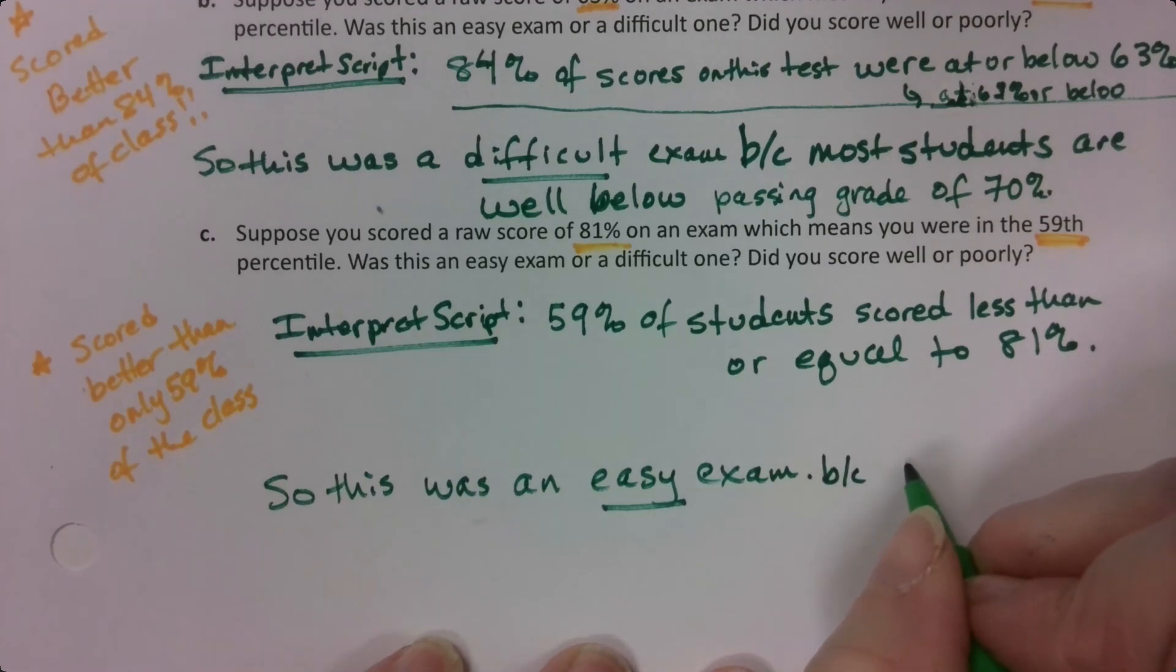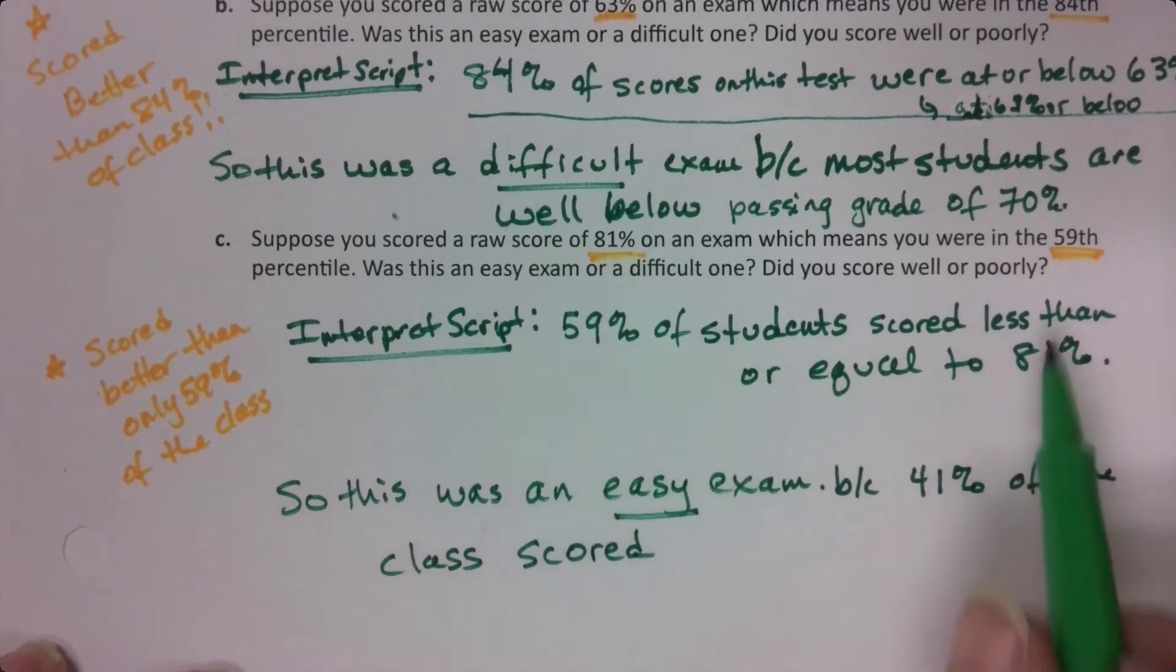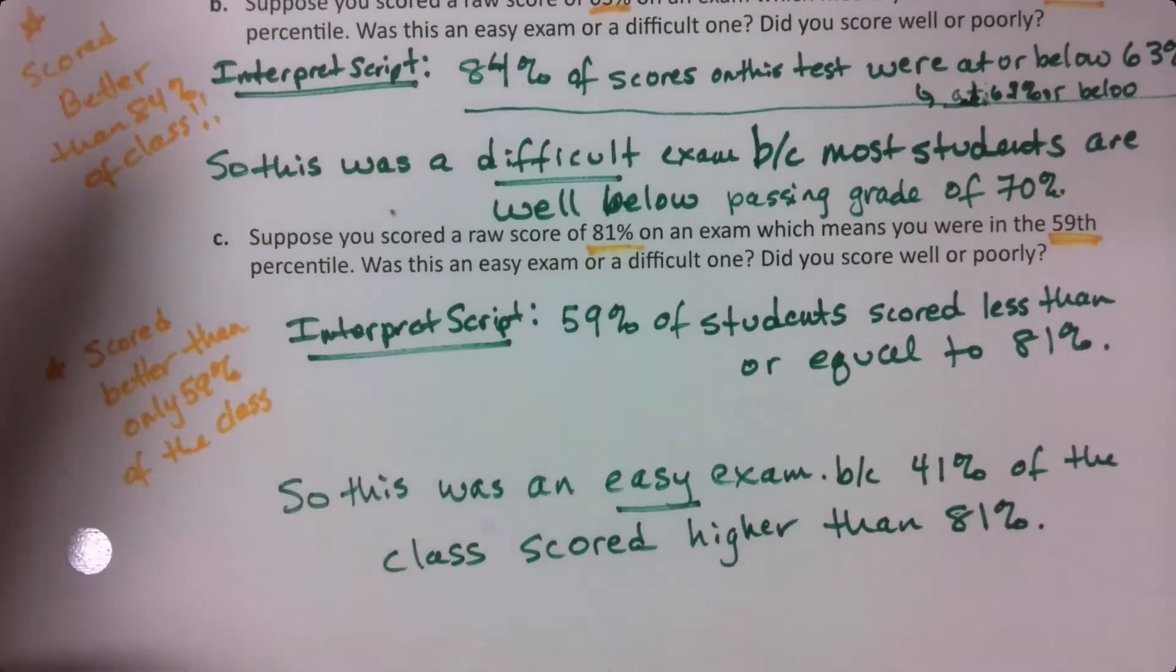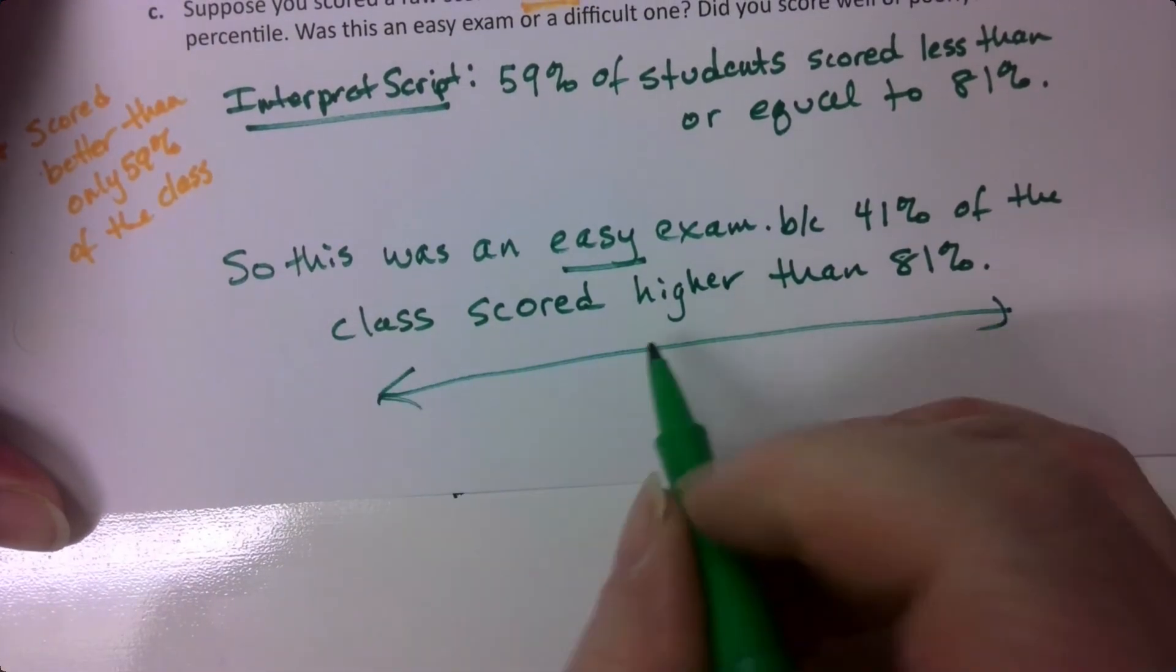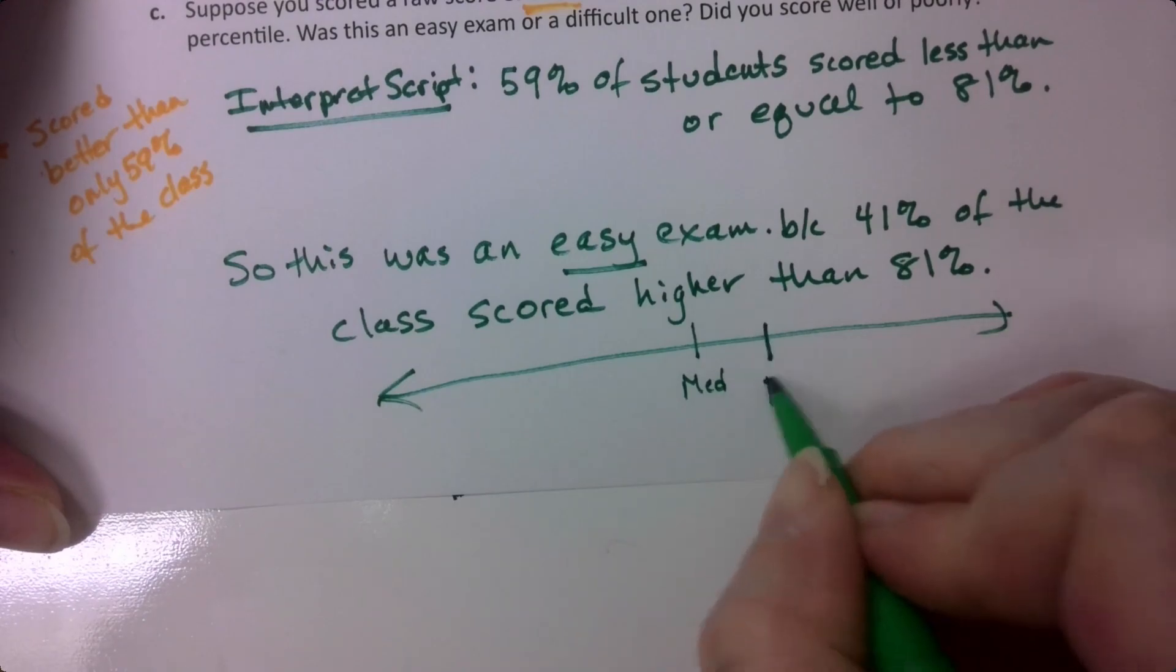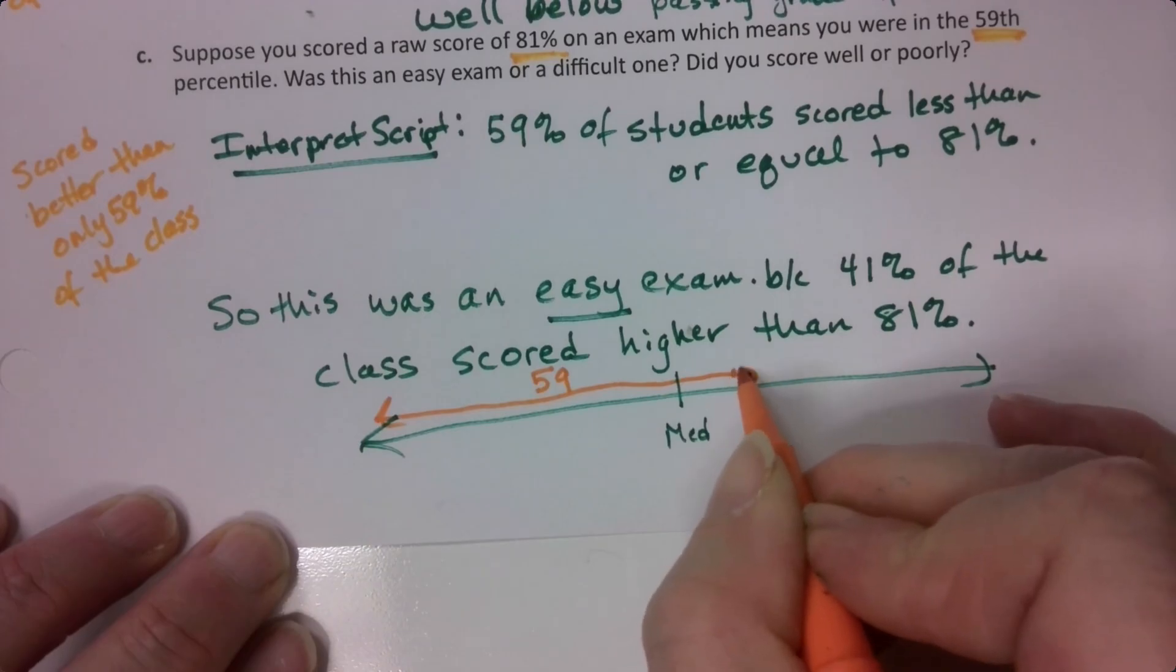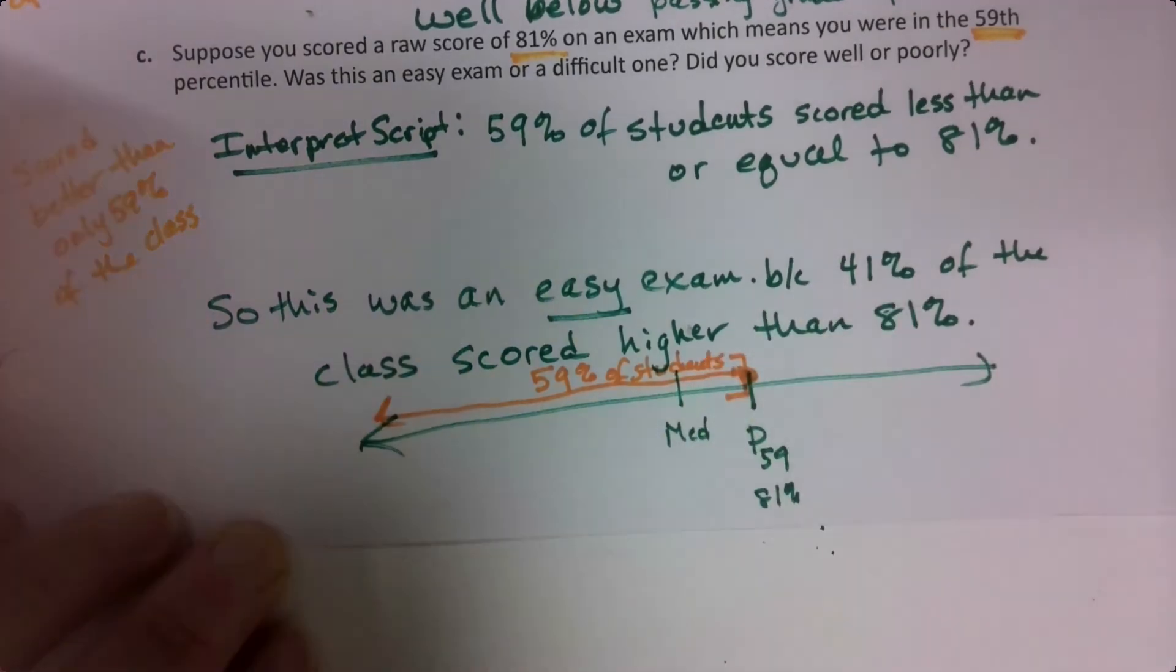Because, let's think, 41% of the class scored higher. If 59% is at or below 81, then 41% is higher than 81. So it always pays to kind of think about it on a number line. So you have your median right here, it's got 50%. Then over here, you're at 59%. So P59, that's 81%. What that means is that over here is 59% at this value or less than that value. So here or less is 59% of the class of students.